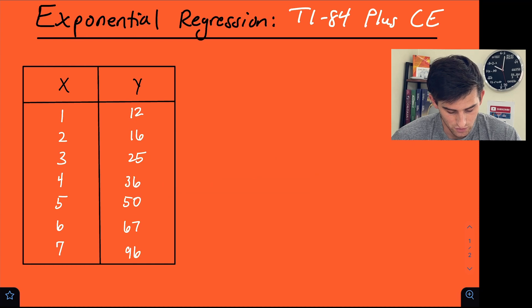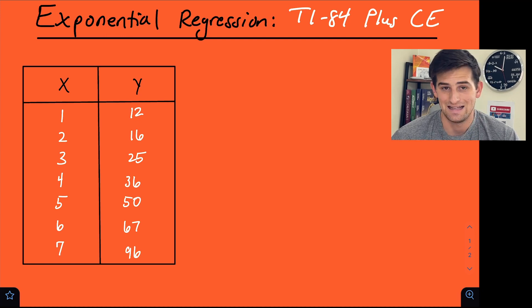So in this video, here is our data set that we're going to look at. We've got x values 1 through 7 and then y values 12, 16, 25, 36, 50, 67, and 96.